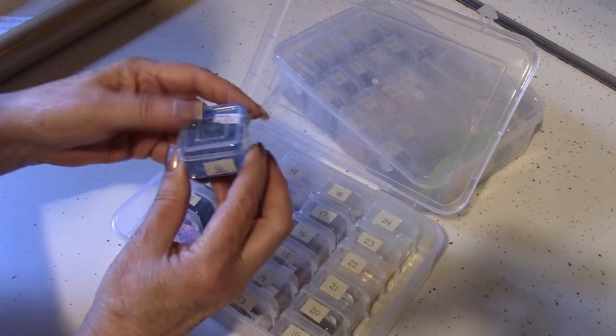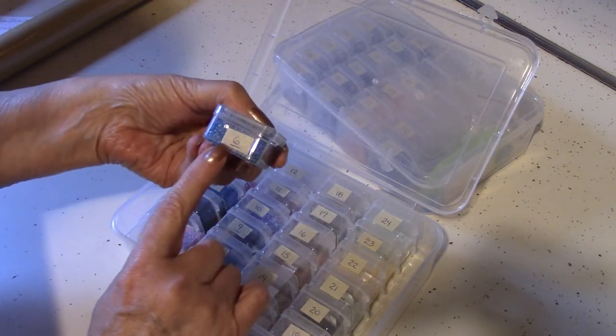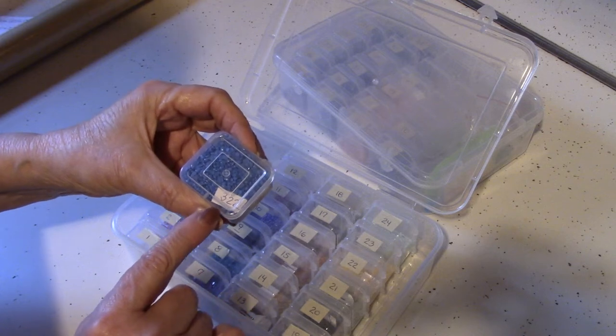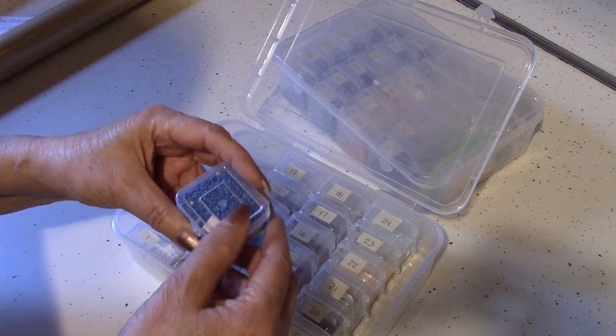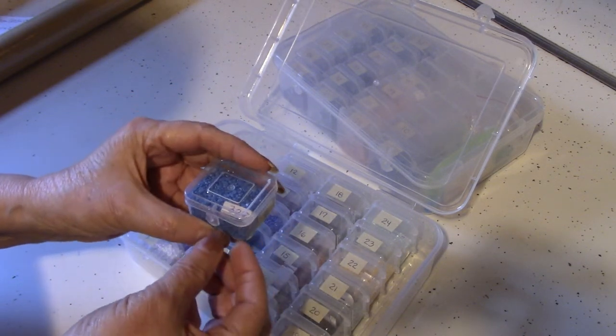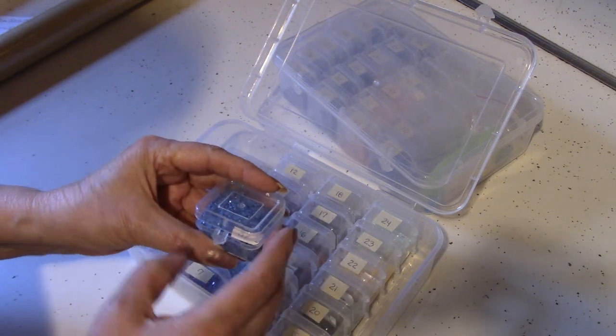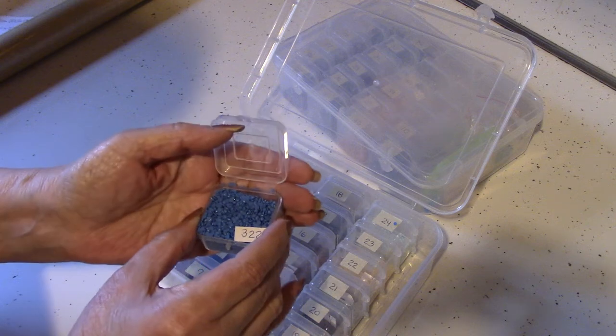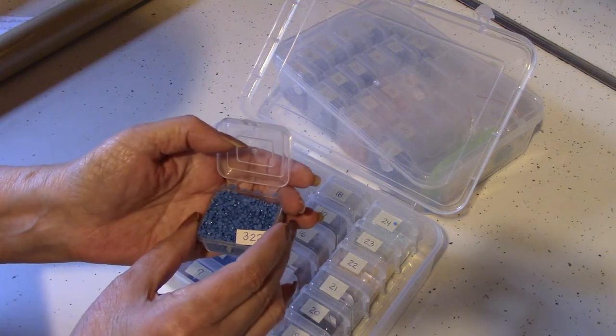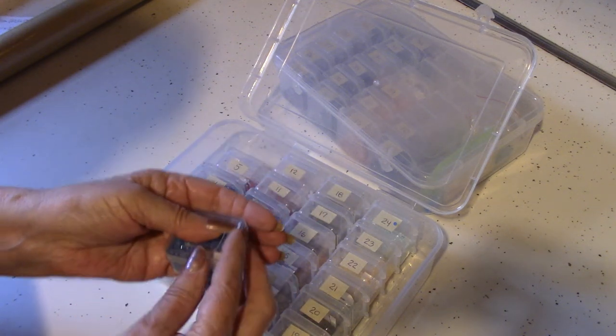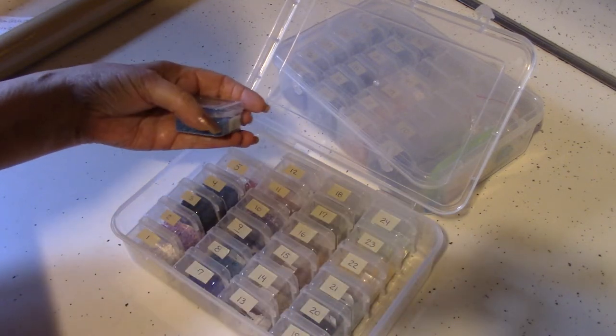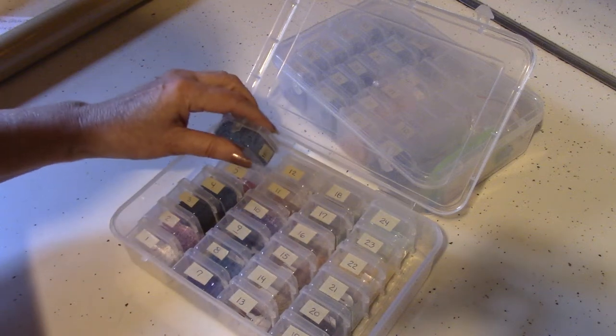I'll just take one out so you can see this is the number. The number six. I also put a little tag inside which shows the DMC equivalent number and this actually shows the drills, which unfortunately I jostled, so I will put those back.